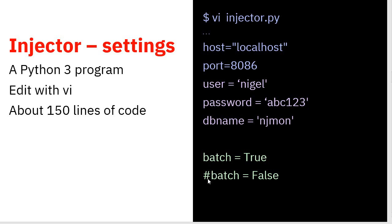If you comment that out and uncomment the false option, it will read data coming in probably down a pipe as NJMon generates the data. NJMon buffers up all the output and sends it in one write operation to the injector, so it will suddenly get a whole bunch of data, work out the end of a record, and push that into the database immediately. There's no batching, but the data arrives as soon as it was sent from NJMon.